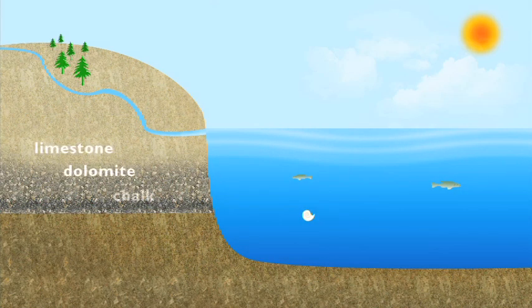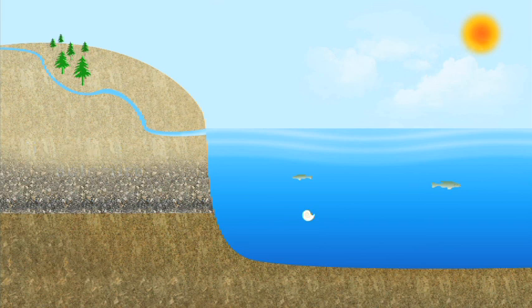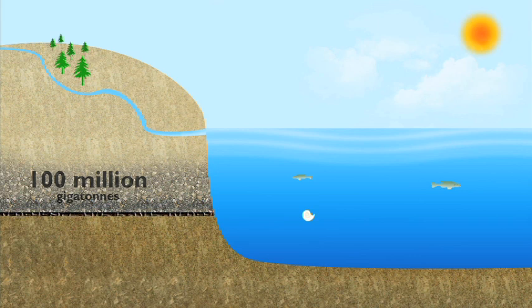The biggest carbon sink is the sedimentary rocks and fossils that form deposits of limestone, dolomite and chalk within the Earth's crust. Here, up to 100 million gigatons is chemically bound and stored. Of this, about 4,000 gigatons is stored as fossil fuels.